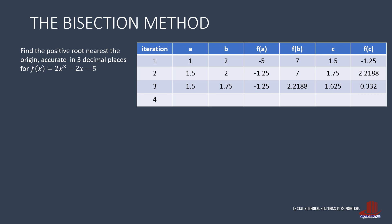Continue to the fourth iteration where B is 1.625, F of B is 0.332, then A is still 1.5, with F of A still negative 1.25. Now compute for C as the average of 1.5 and 1.625, giving 1.5625. Use this to determine F of C, which comes out as negative 0.4956. The negative sign of F of C means that C should be replacing A.